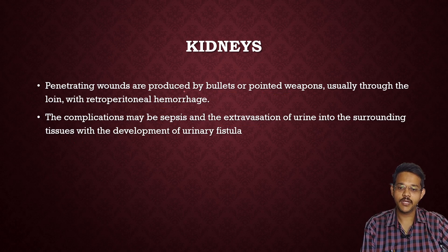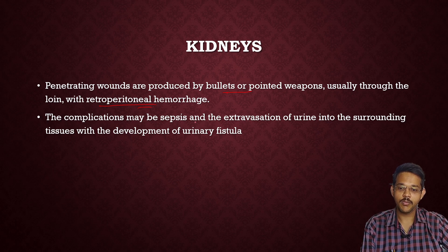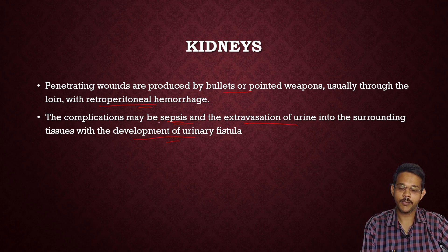Penetrating wounds of the kidneys are produced by bullets or pointed weapons, usually through the loin, with extraperitoneal hemorrhages as a complication. Complications may include sepsis and extravasation of urine into surrounding tissue, with development of urinary fistula.